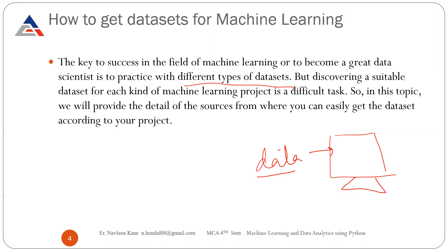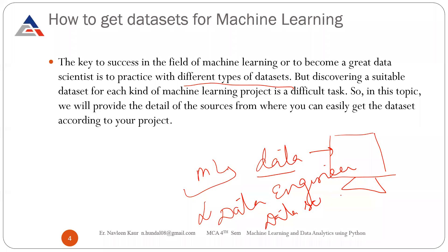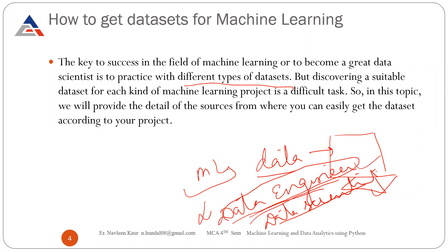Suppose you get a job in a company that is working on machine learning. Your job profile could be data engineer or data scientist. These are the job profiles available if you learn machine learning properly. When you are a data scientist, you always want to work with different types of datasets. When working on datasets, it is very important to find which dataset is best suitable for a particular problem. We are going to discuss various types of datasets, what a dataset is, and from where you can get them.